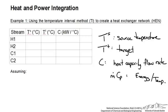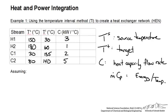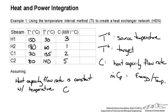I will start filling in the temperatures. The heat capacity flow rate values were not given in the problem statement, so I am going to write those in. I have the assumption that these heat capacity flow rates are going to stay constant as a function of temperature — in other words, C is not a function of temperature.